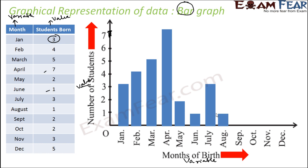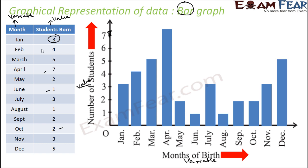September, two students — bar of height two. October, two — bar of height two. November, three — bar of height three. December, five — bar of height five. So this data is now represented in bar graph form. The variable is on x, the value is on y. The color, width, and spacing can be anything — they do not matter in a bar graph. Only the height of the bar matters.